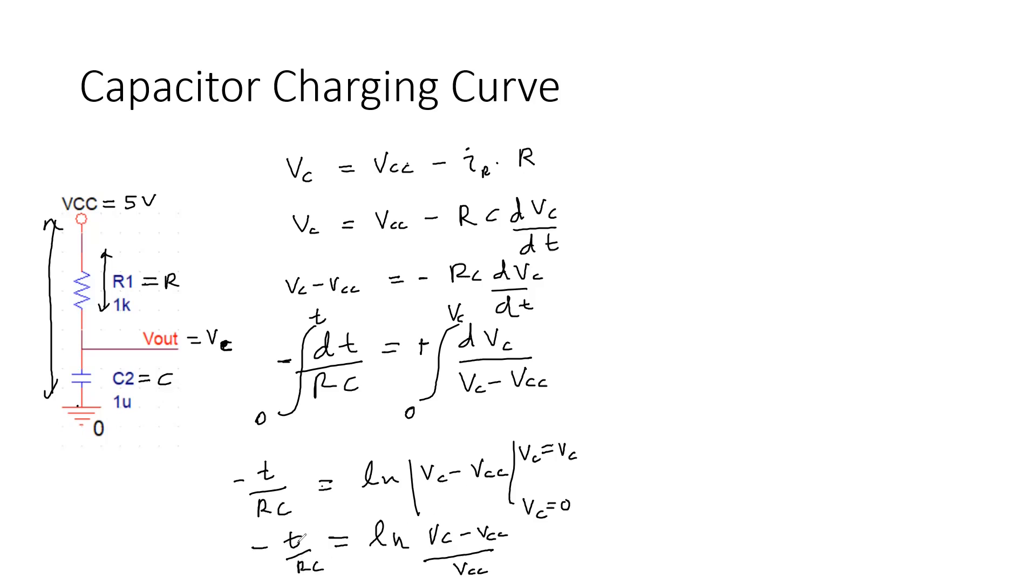Now this one, both sides we can put it as an exponent term. E to the power minus T over RC equals e to the power, but ln is the inverse function of the exponent.